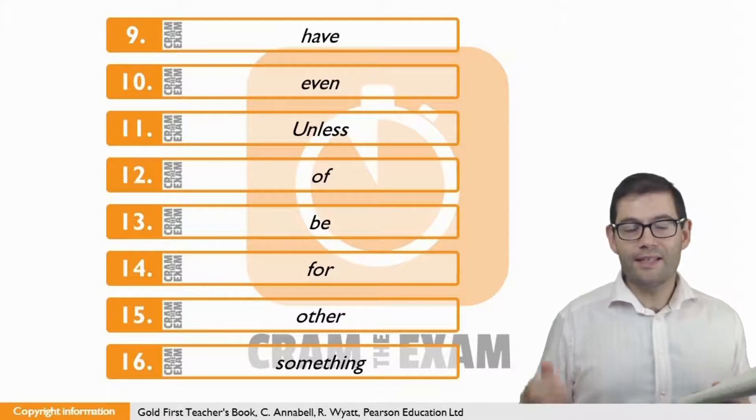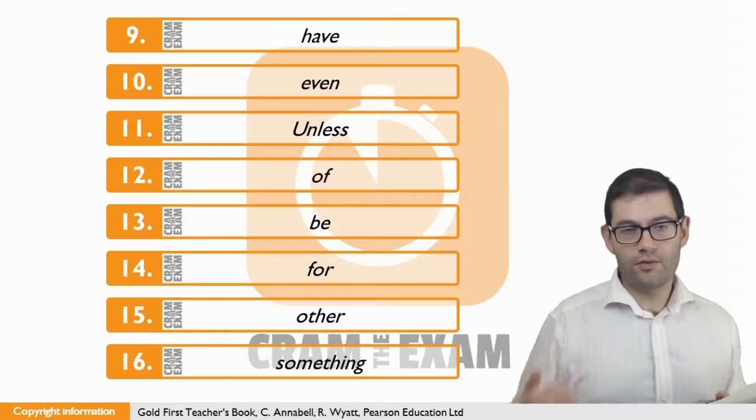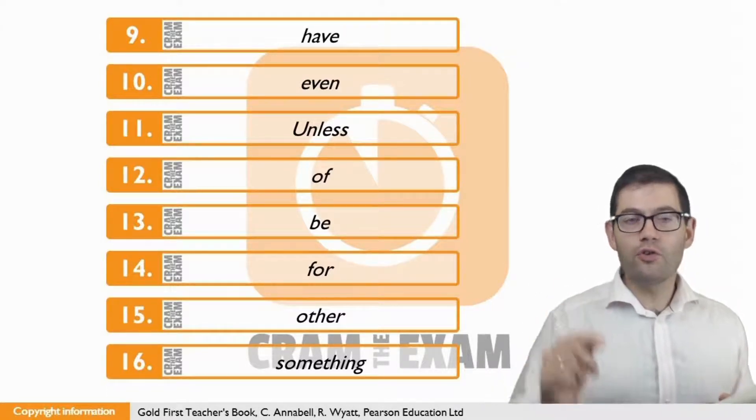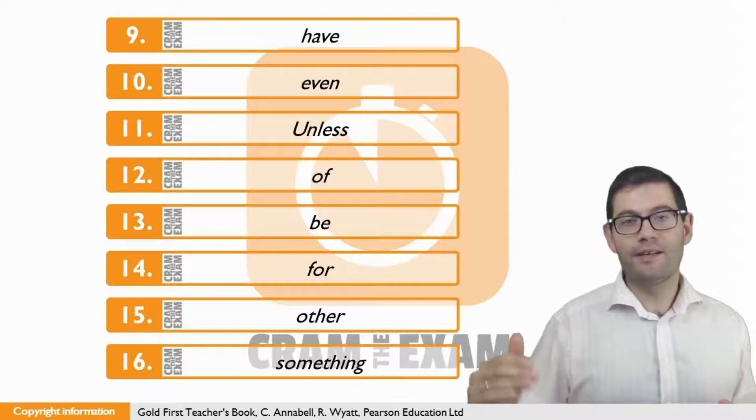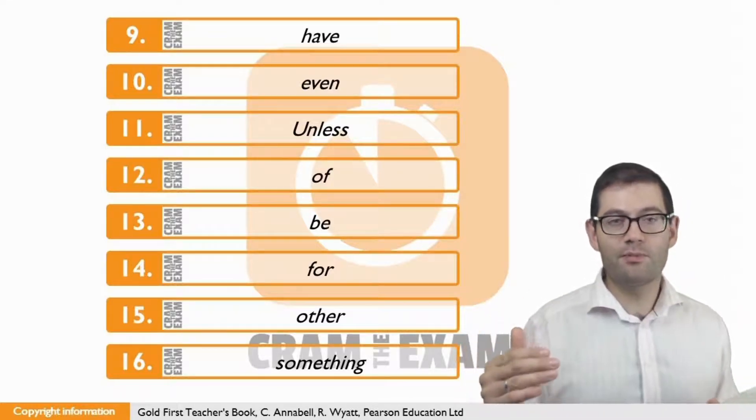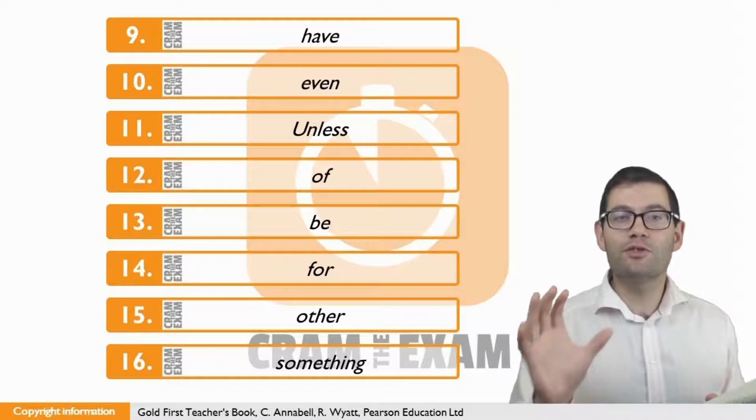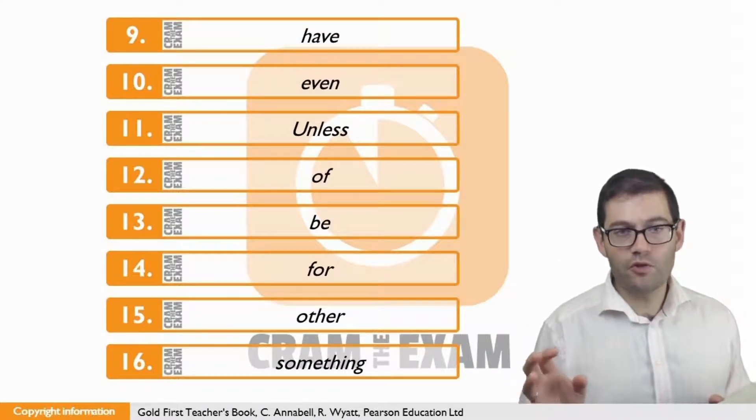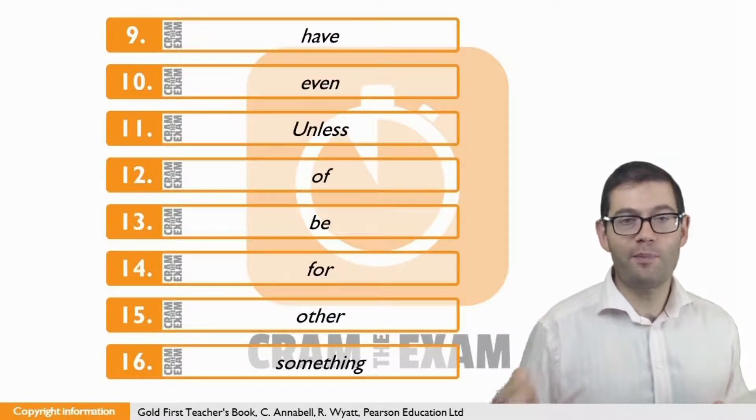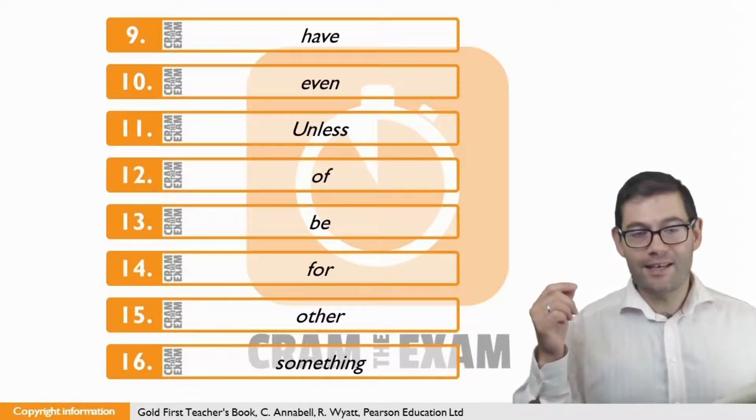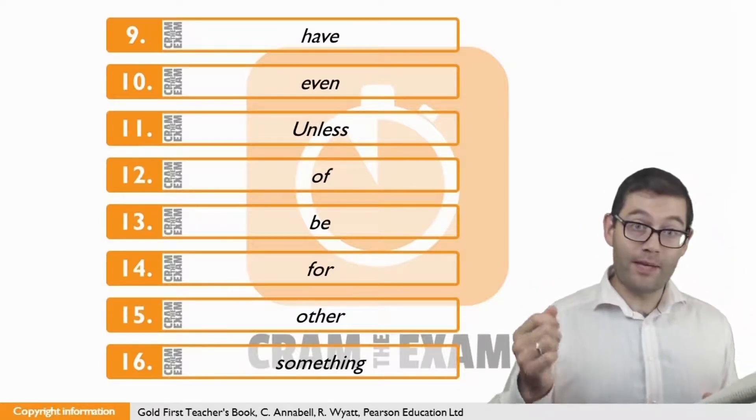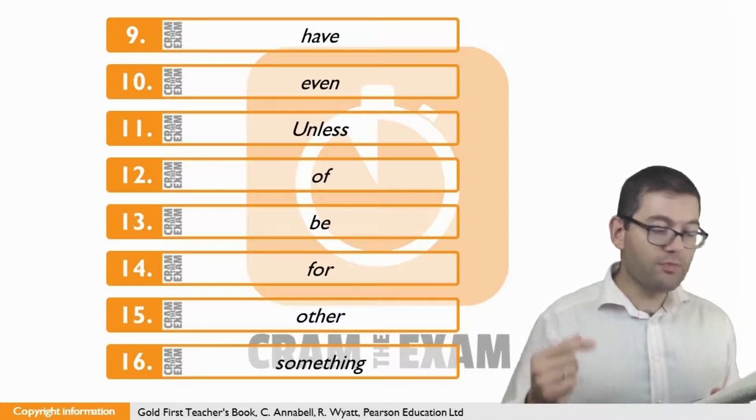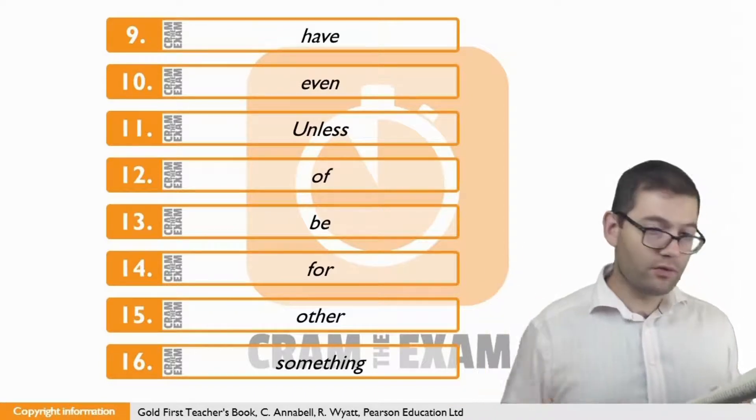For question thirteen, it's a simple future continuous form. You will, gap, and then we've got the present participle of spend, spending. This is a continuous form. What do we need with continuous forms? We need a form of the verb be. And the correct form that we need here is be. You'll be spending the rest of your dot dot dot.